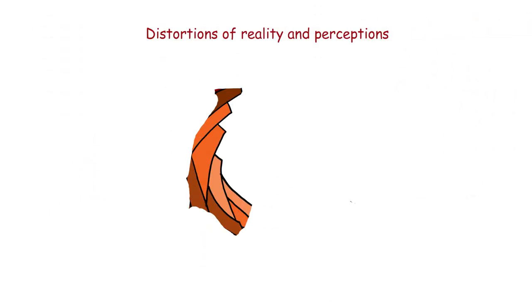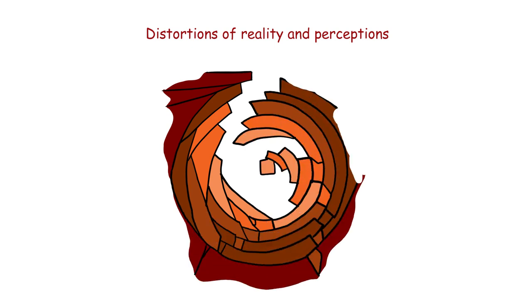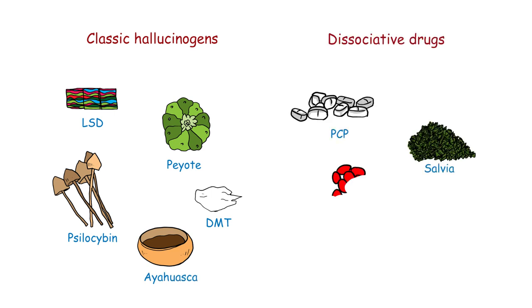A class of drugs that leads to distortions of reality and perceptions, hallucinogens are typically broken down into two main categories: classic hallucinogens, such as LSD, peyote, psilocybin, DMT, ayahuasca, and dissociative drugs such as PCP, salvia, DXM, ketamine.